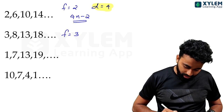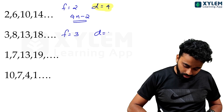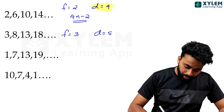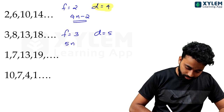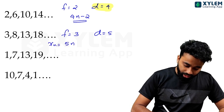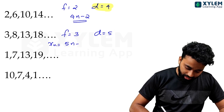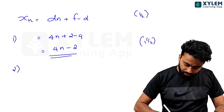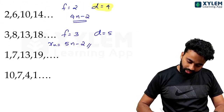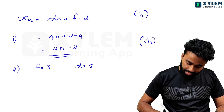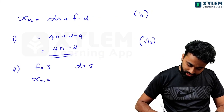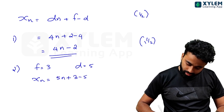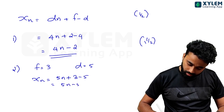The answer changes. In the formula, D is 5 and F is given. The formula is: xn equals dn plus f minus d. So with d equals 5, we get 5n. And 3 and 5 minus 2.